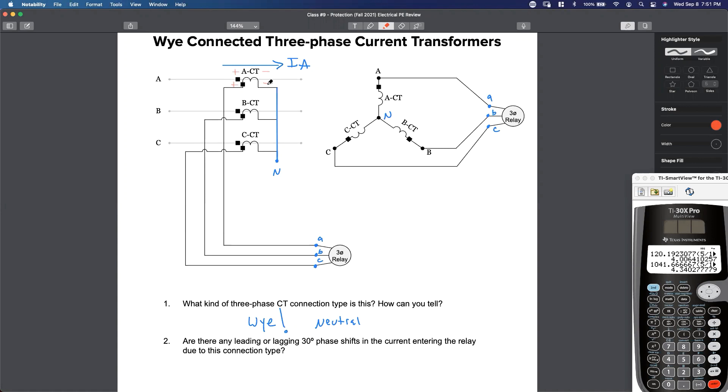What direction is the ACT current going to flow in? It's going to flow from the neutral through the CT down to the relay, right? Here is I, A, CT.